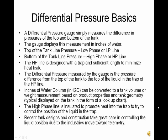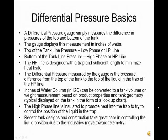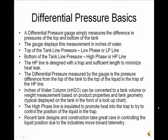A differential pressure gauge simply measures the difference in pressure of the top and bottom of the tank. The gauge displays this measurement in inches of water. The top of the tank's pressure is communicated to the outside of the tank using a small stainless steel line called the low phase or LP line. The bottom of the tank's pressure is communicated using another stainless steel line called the high phase or HP line.